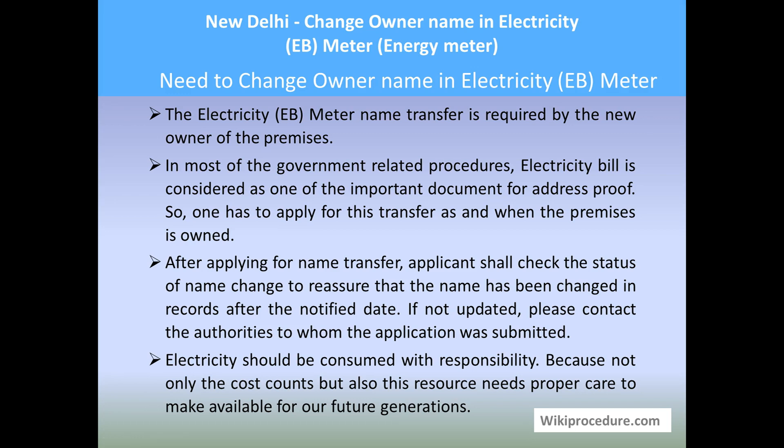Whenever you apply for a new electricity connection, the electricity will be provided in the applicant's name, who is the owner or occupant of the premises. Whenever there is a transfer in the name of the owner of the property, the new property owner has to apply for a name transfer at the respective electricity board office. When the electricity bill is generated, it carries the name of the owner of the electricity connection as well as the premises address.